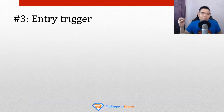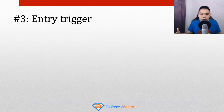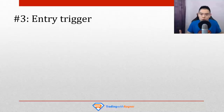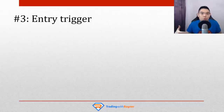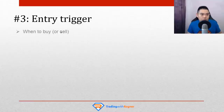In this section, it's about entry trigger. Let's do a quick recap of what you've learned so far. You've learned about market structure — it tells you what to do: should you be looking for buying opportunities, selling opportunities, or to stay out of the markets? Then we covered area of value, which includes support and resistance and moving average, to tell you where to buy or sell. Now we're moving to the third component, entry trigger. This tells you when to buy or sell.